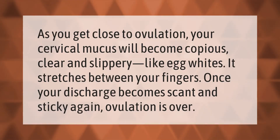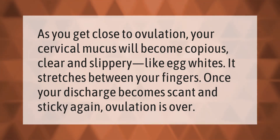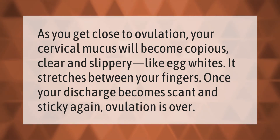As you get close to ovulation, your cervical mucus will become copious, clear, and slippery like egg whites — it stretches between your fingers. Once your discharge becomes scant and sticky again, ovulation is over.